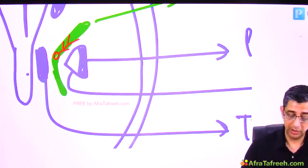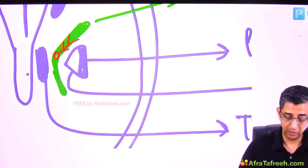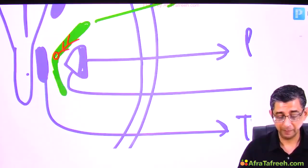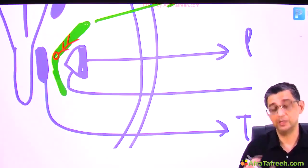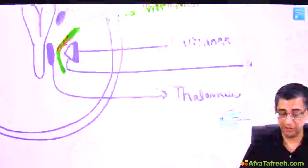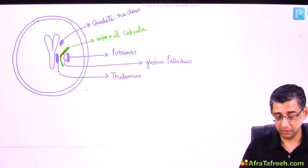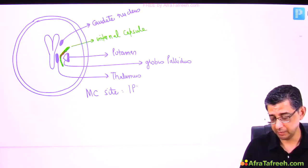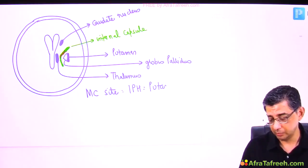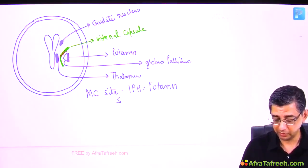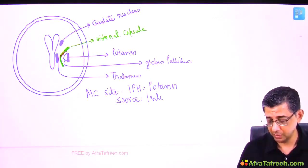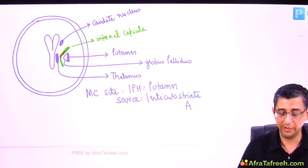In internal capsular stroke, there is a pure motor manifestation — no features like aphasia or apraxia, unlike cortical strokes. The most common site for brain hemorrhage is the putamen, located slightly laterally. The blood vessel involved is the lenticulostriate artery, a branch of the middle cerebral artery.